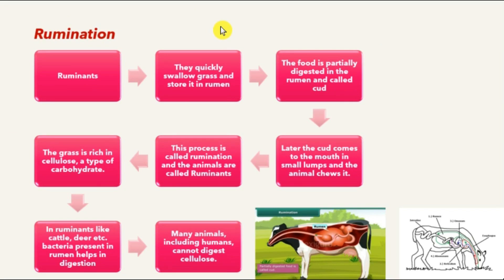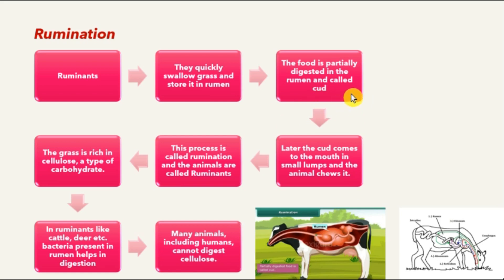You might associate this with the phrase 'chewing the cud.' Actually, these animals quickly swallow grass and store it in their rumen. The food is then partially digested in the rumen, and this partially digested food is called cud. Please refer to the chart on the slide and follow the arrows. Later, the cud comes back to the mouth of the organism in small lumps, and the organism chews it.